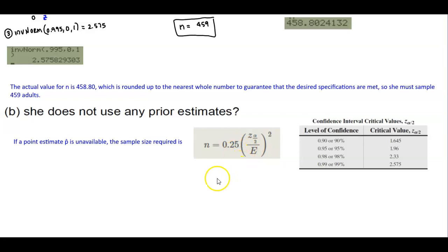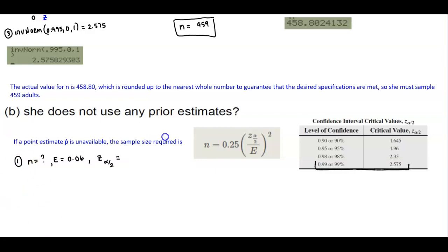In our problem, we're looking for n, the sample size. We know that the margin of error is 0.06. We also know the critical value, z alpha divided by 2, for 99% confidence. We can look it up or do what we did above — the critical value is 2.575.